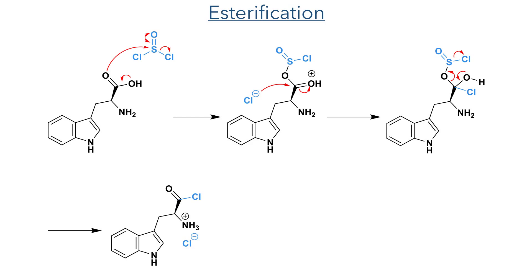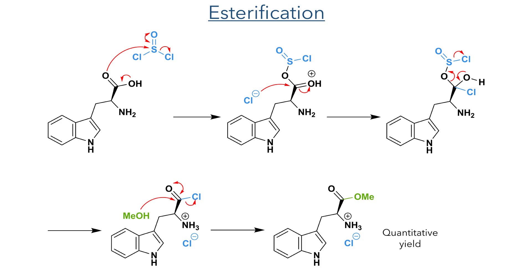To synthesise the precursor for this lactamisation, they started with L-tryptophan which was chlorinated using thionyl chloride. In this reaction, an oxygen of the carboxylic acid acts as a nucleophile and attacks thionyl chloride, breaking one of the sulphur-chlorine bonds. This activated acid is then attacked by the chloride, forming a tetrahedral intermediate which decomposes, forming an acyl chloride. This was then directly reacted with methanol to form a methyl ester in a quantitative yield.